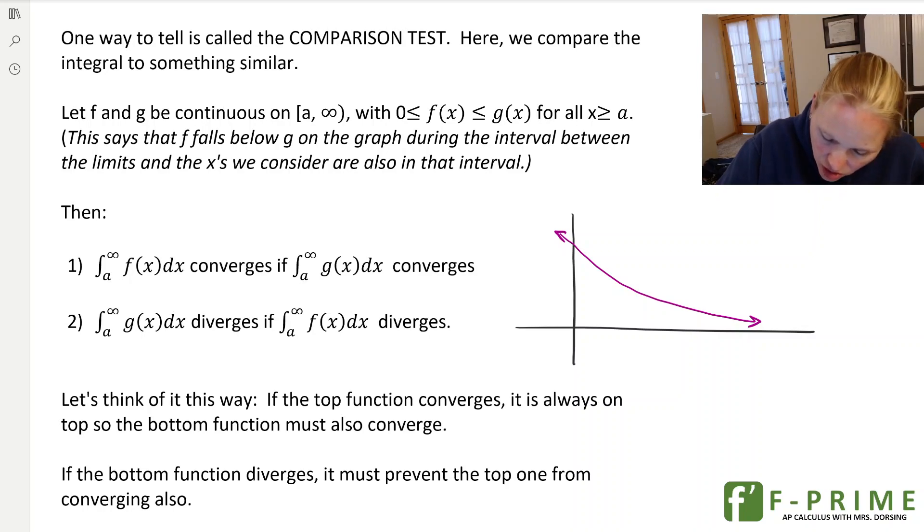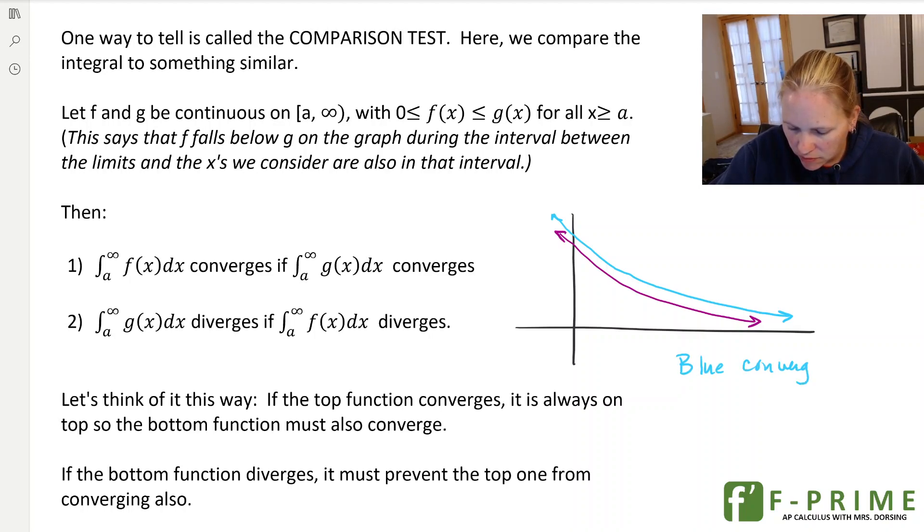And one curve is always on top of the other curve. So here the blue curve is always on top of the purple curve. If the blue converges, what the comparison test says is that if the one on the top converges, well then the one on the bottom converges too. That's really all it says.